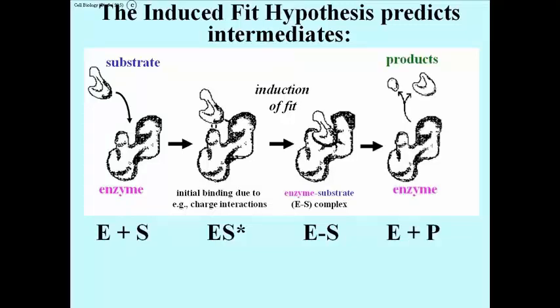Finally, we have an enzyme and its products, and the products have lower affinity for the enzyme, and so they dissociate from the enzyme.